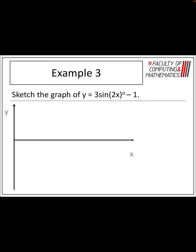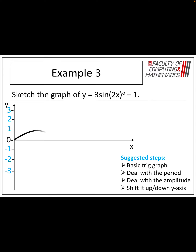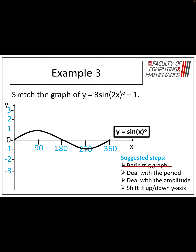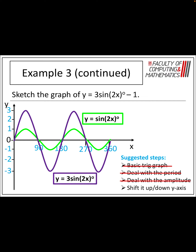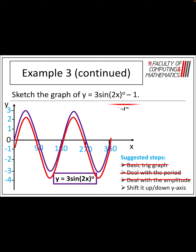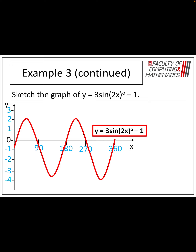Here's a fairly complicated one — we've added in an amplitude, a period, and a vertical shift. First, I would like them to draw the graph of sine with the key features: 90, 180, 270, 360. Then deal with the period — I want the first full cycle up to 180 with sine 2x. Then deal with the amplitude — stretch it to go up to 3 and down to negative 3. That gives us 3 sine 2x, and then move it down by 1, shifting the whole graph down. And there's your graph — you can then pick off your maximum and minimum values, amplitude, and period.